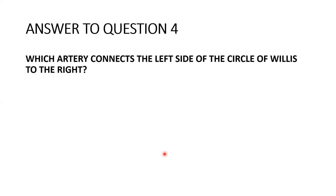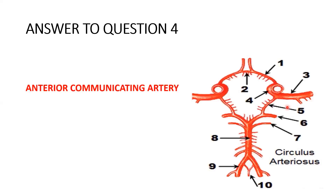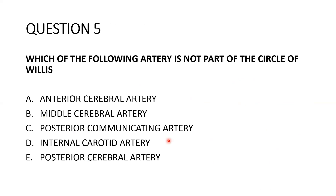Question four: which artery connects the left side of the Circle of Willis to the right side? Looking at the diagram, the right side and the left side are connected by the artery labeled number two — the anterior communicating artery. The anterior communicating artery links the left side and the right side of the Circle of Willis.